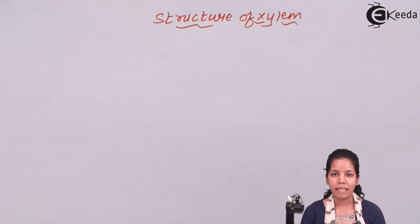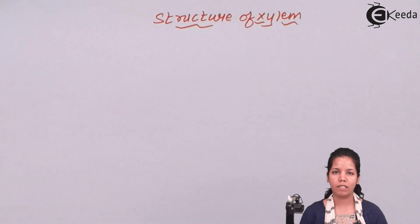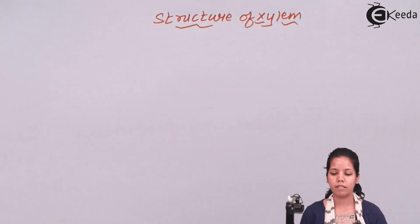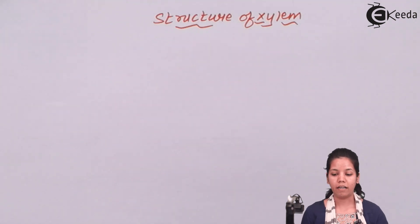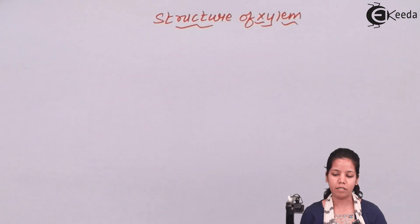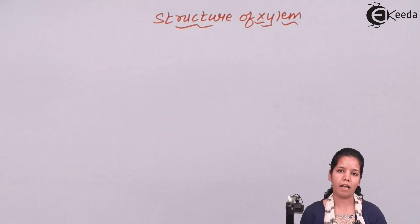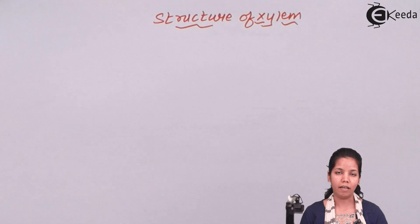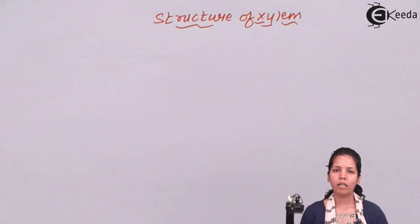Xylem basically consists of four different types of cells, or you can say four different parts. One of them is tracheids, vessels, fibers, and parenchyma cells. All of these together help xylem in the conduction of minerals and water.